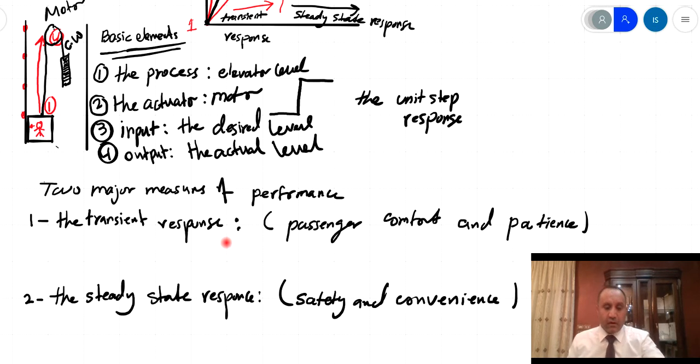For the first measure, the transient response, there is an indication of how fast - one of the indications actually, which later on we can call the rise time.